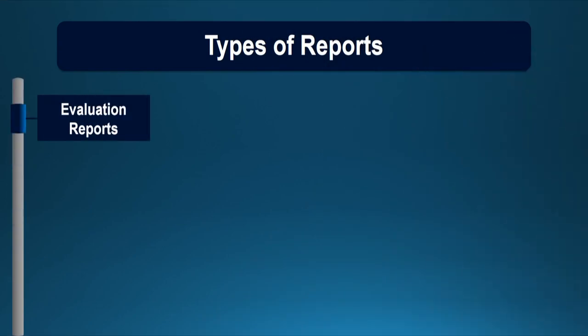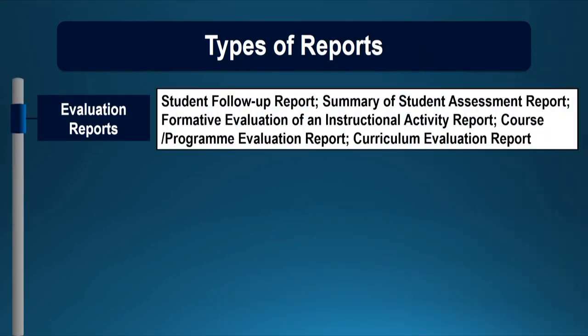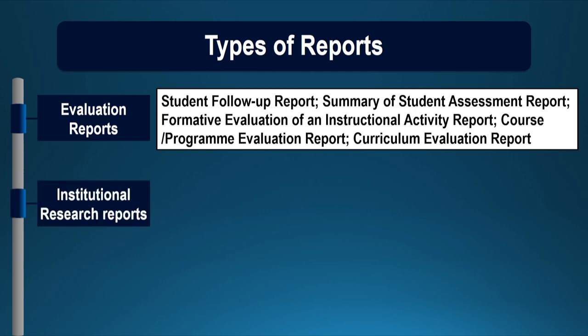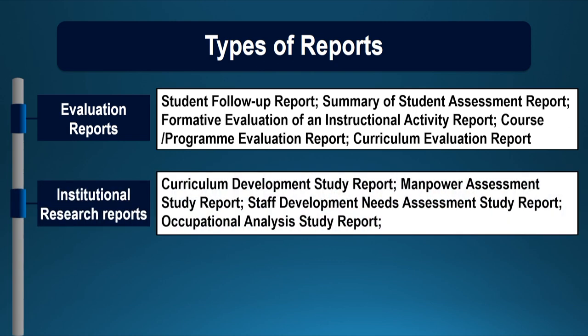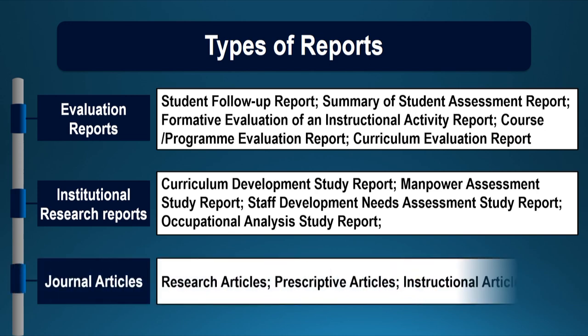In an institution, we can have different types of reports: evaluation reports including student follow-up reports, summary of student assessment reports, formative evaluation of an instructional activity report, course or program evaluation report, and curriculum evaluation report. We may also have institutional research reports including curriculum development study report, manpower assessment study report, staff development needs assessment study report, occupational analysis study report. We are also interested in writing journal articles, research articles, prescriptive articles, or instructional articles.